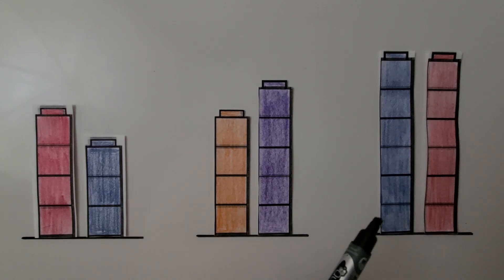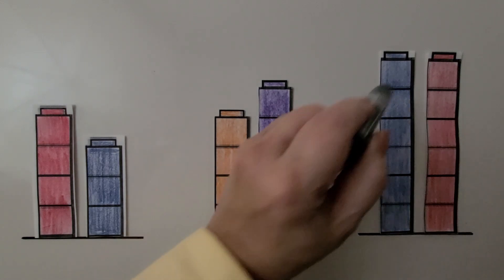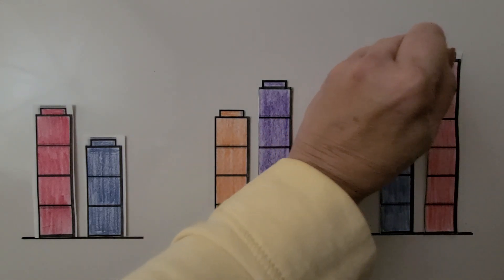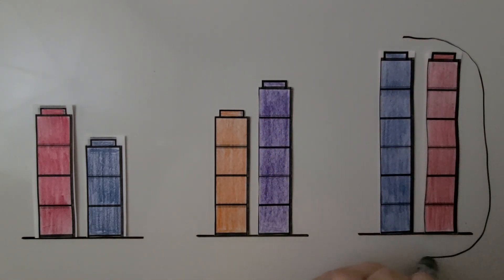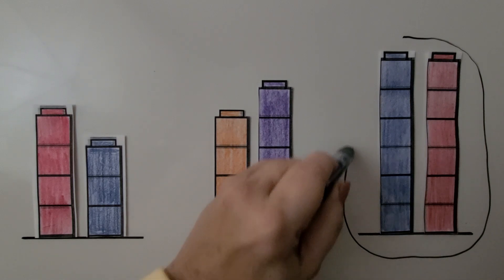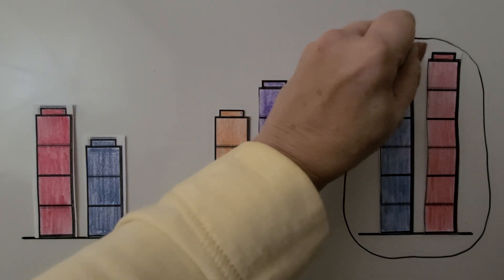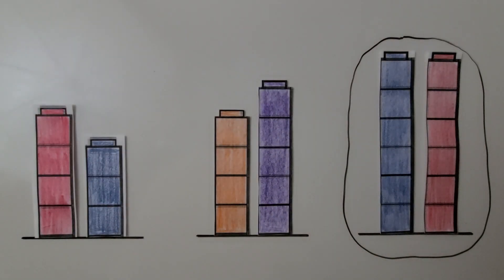Can you tell which set of cube towers are about the same height? Is it this set, this set, or this set? If you said this set, you're right. We need to circle this — that is the set of cube towers that is about the same height.